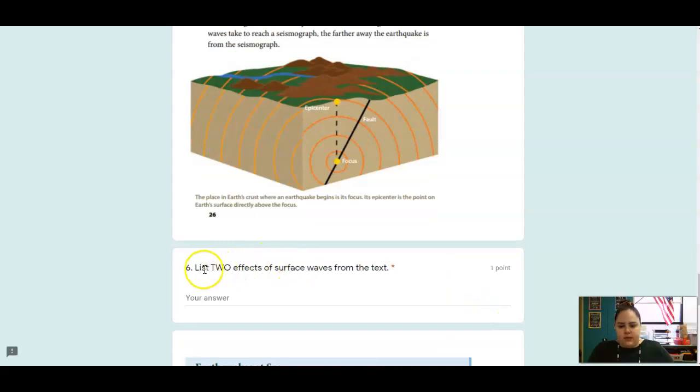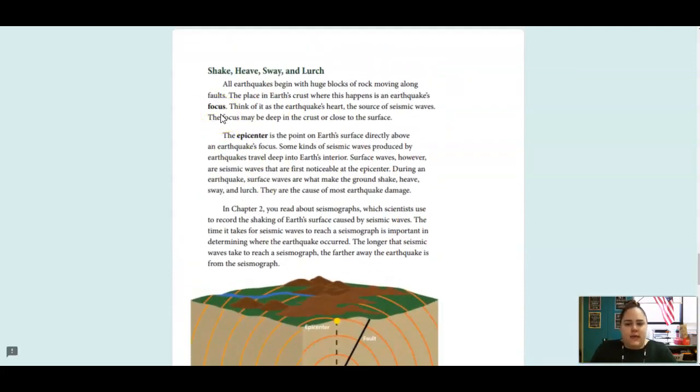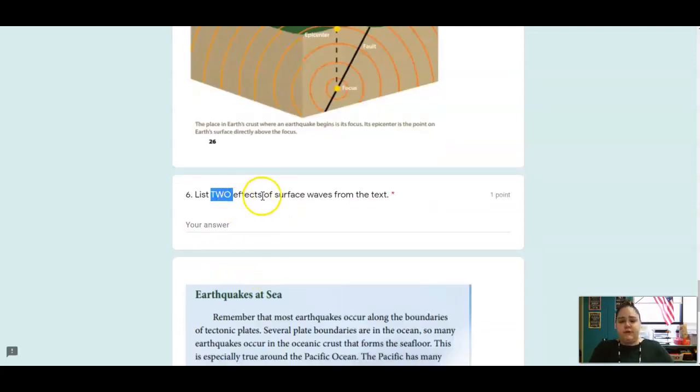The next one wants to know two effects of surface waves. All earthquakes begin with huge blocks of rock moving along faults. The epicenter is the point on Earth's surface directly above an earthquake's focus. Surface waves are seismic waves that are first noticeable at the epicenter. During an earthquake, surface waves are what make the ground shake, heave, sway, and lurch. They are the cause of most earthquake damage. So, two different effects of surface waves. What happens because of these surface waves?